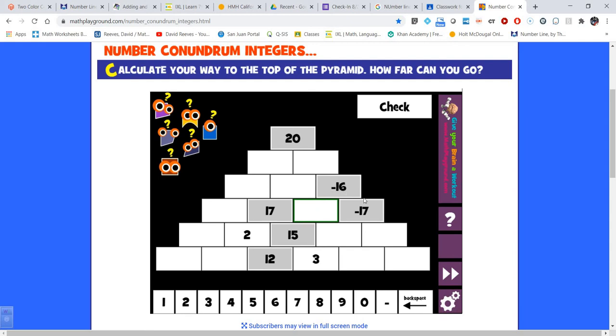Here I have a negative 16. Here I have a negative 17. What number do I need to add to negative 17 to get negative 16? And that would be a 1. So I put a 1 there. And now if I have 17 and 1 what would this be? This would be 18. I've got 17 here and 1 that gave me that 18 here.